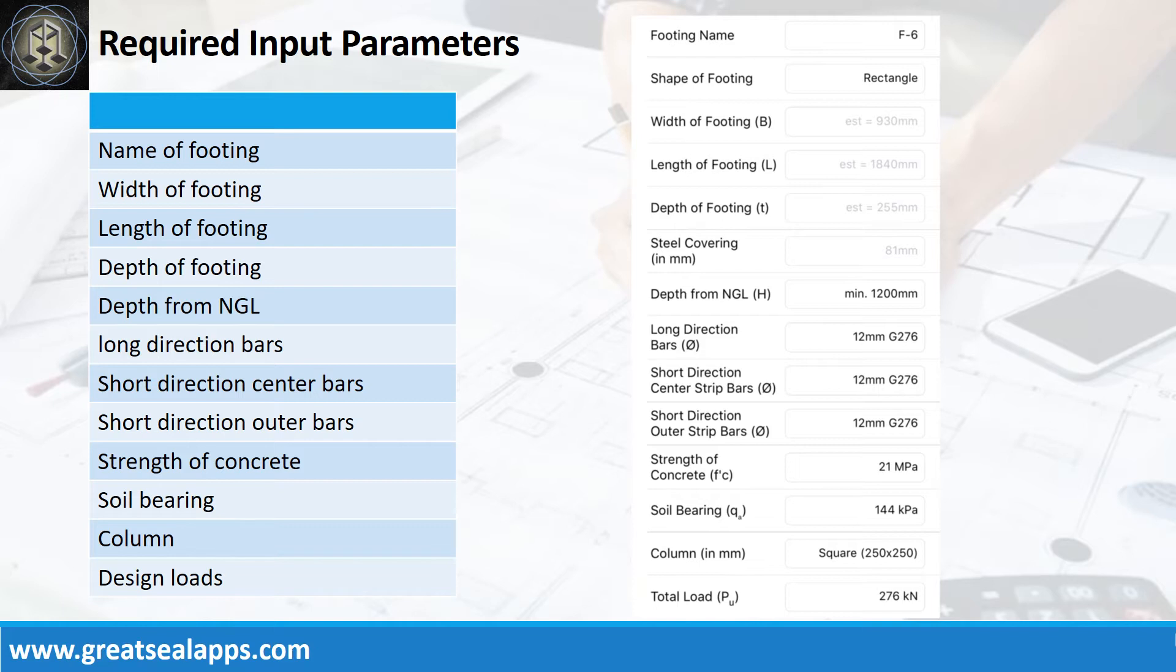Enumerate input parameters required: footing name F6, shape of footing rectangle, depth from natural grade line 1200mm, long direction bars 12mm bar at grade 276, short direction bars 12mm bar at grade 276.